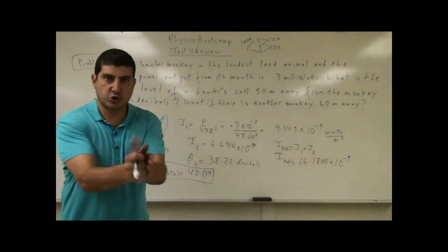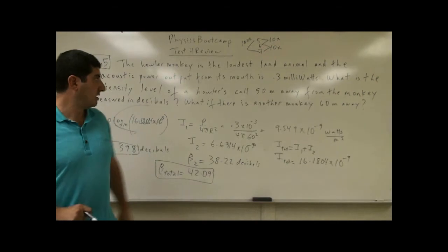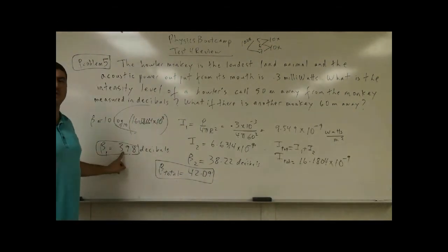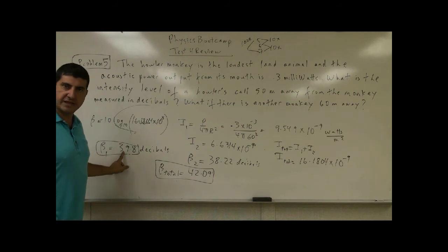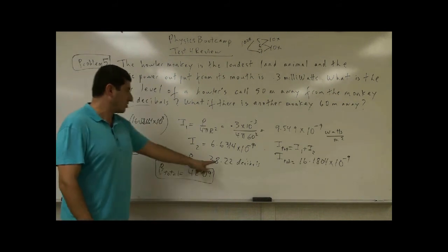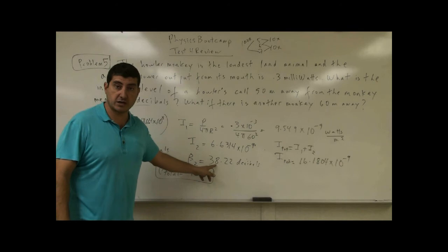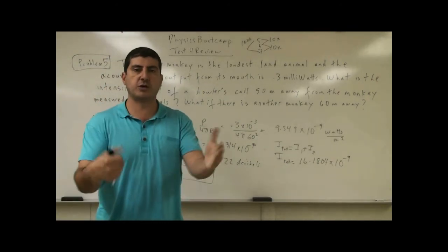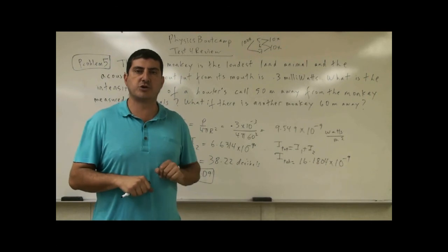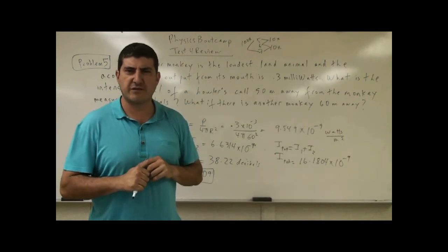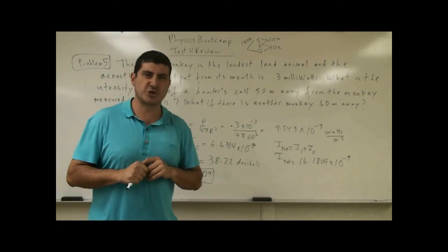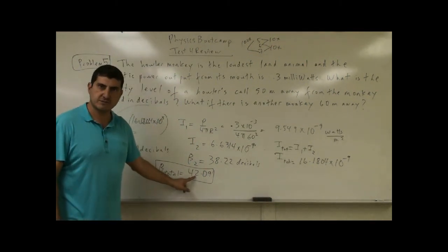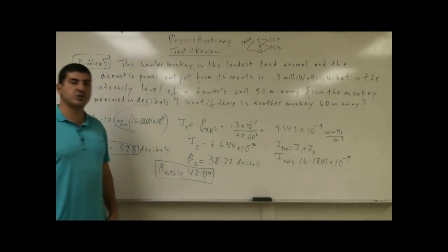This would be equivalent to saying something like this. If there was a 3.98 earthquake, and at the same time there was a 3.82 earthquake, boom, they both hit you. 3.82, 3.98, what would be the equivalent power that you get? Will that be equivalent to a 7.0 earthquake? The answer is no. It would only be equivalent to a 4.2 earthquake. So the total decibels you hear, 42.09.